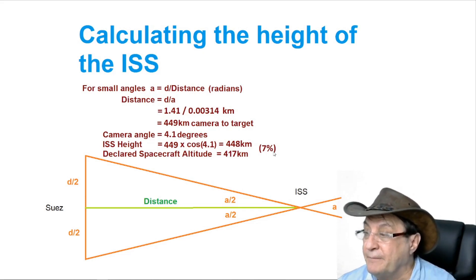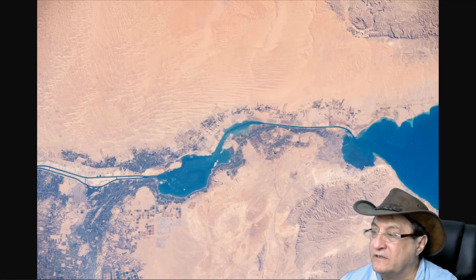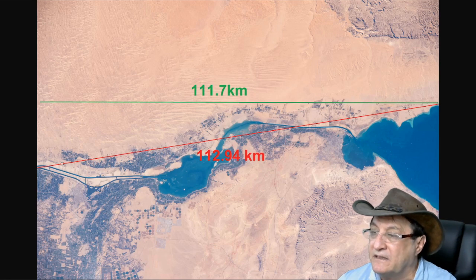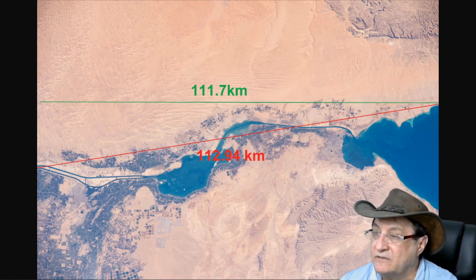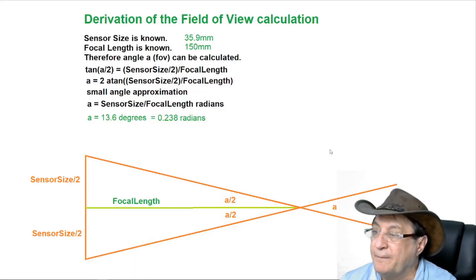Now going on to the next picture, the wide angle shot, I worked out the distance similarly. Now I had some landmarks that I could work out that this line, the red one, it's 112.94 kilometers, and straight across this time, it's straight across the wide part of the picture, 111.7 kilometers. Again we do the field of view calculation and that works out 13.6 degrees, it's a much wider shot, 0.238 radians.